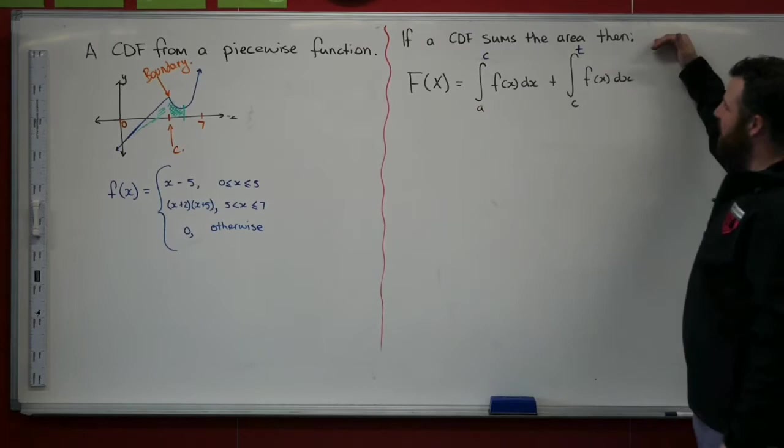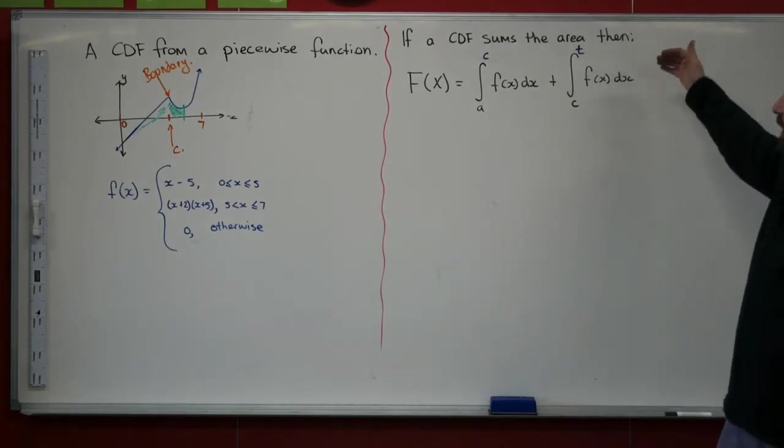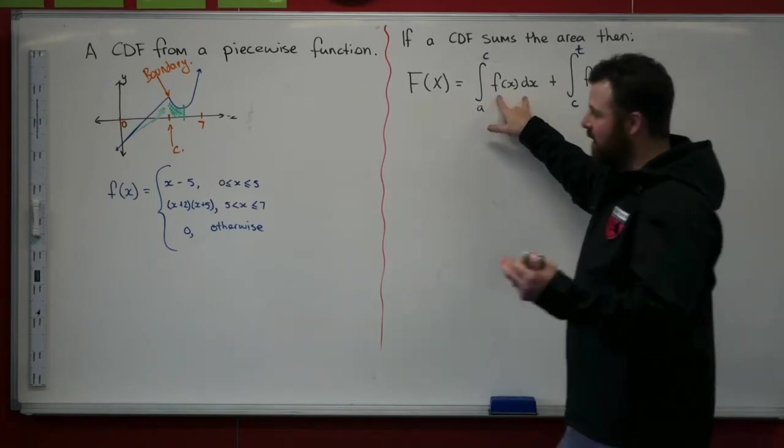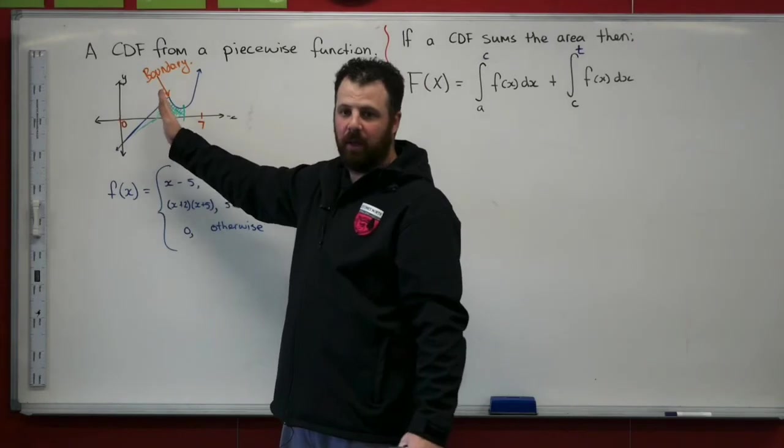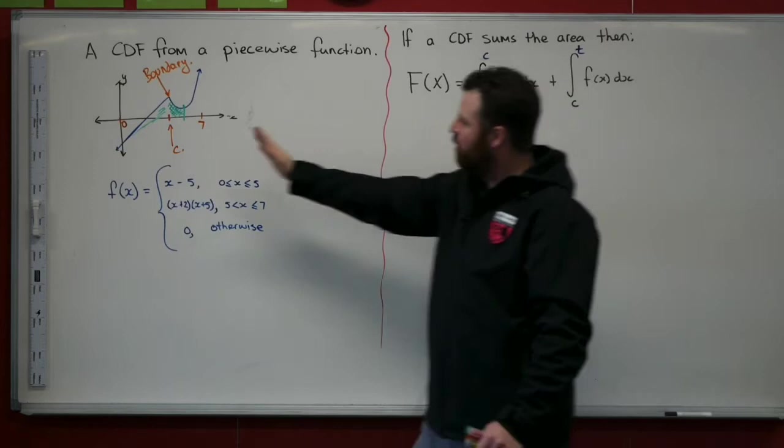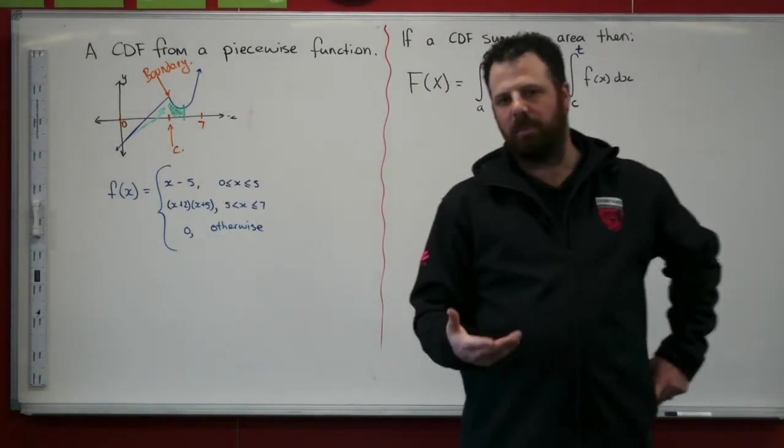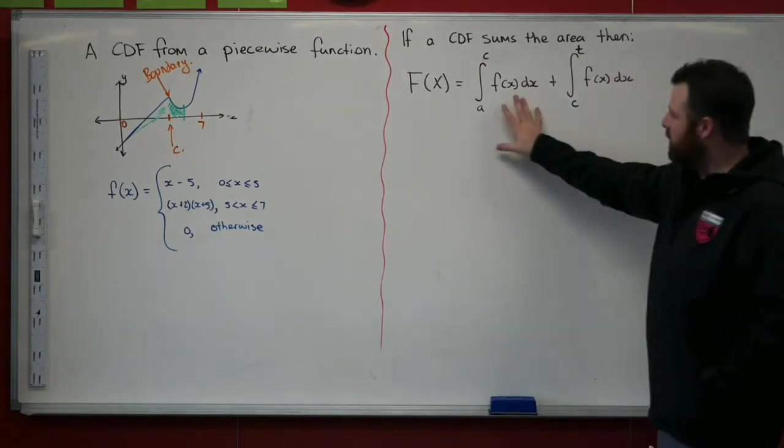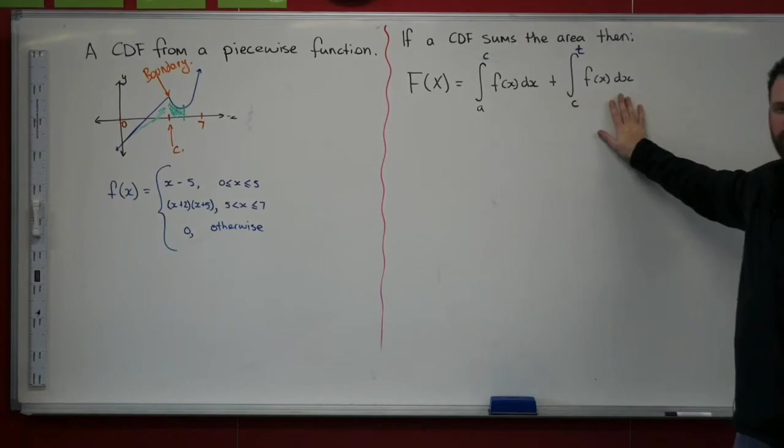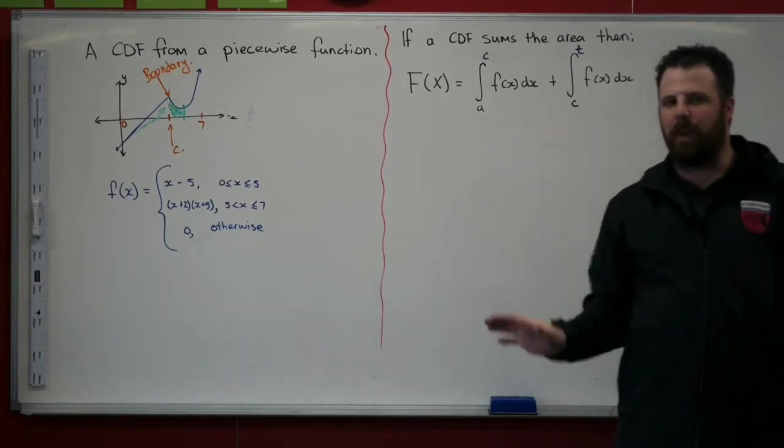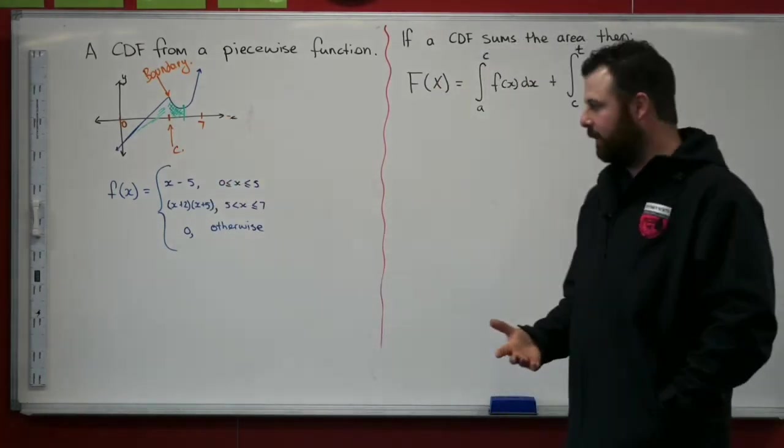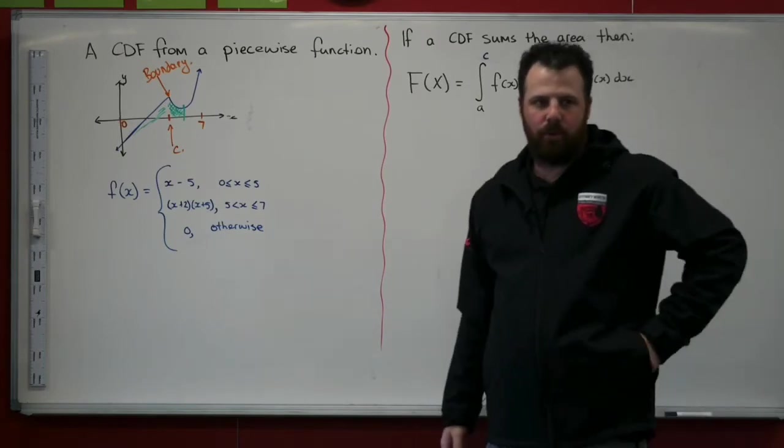And in thinking about that, that's going to help us define what happens with our CDF on this boundary point. Let's call it point C. If a CDF sums up the area under a curve, then our cumulative distribution function is equal to the area up into and including our boundary plus the area from our boundary up until whatever maximum point that we have. And we can split a CDF that was one big integral into two sub-integrals, integrating two separate parts and combining their results. We're going to look at that through an example.